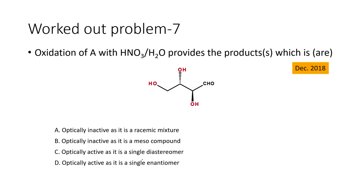Let us move on to the next problem. We have a compound that is going to be oxidized with nitric acid and water, and that provides a couple of products. We are going to find out what is the relationship between the different products formed in this reaction. This is not a simple configuration-assignment problem — we have to carry out one additional reaction first, then see the relationship between the different products. We also need to find out whether the products are optically active or optically inactive.